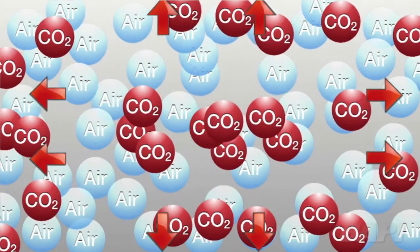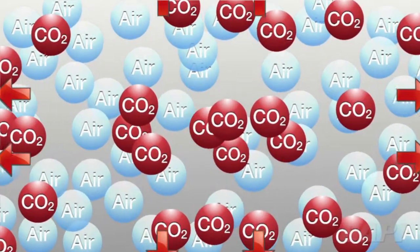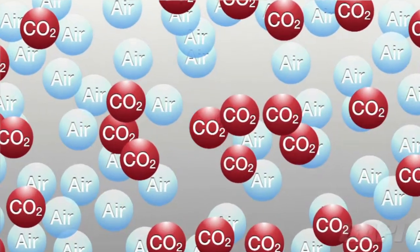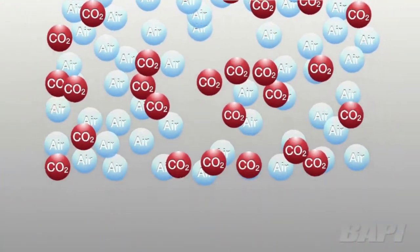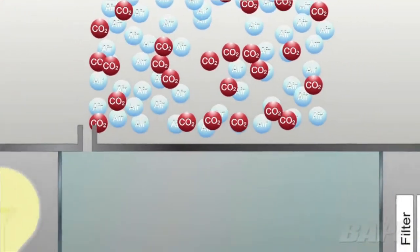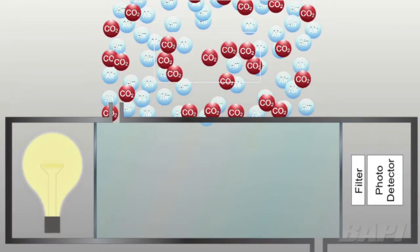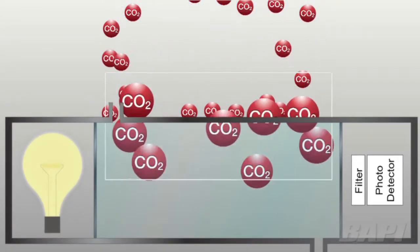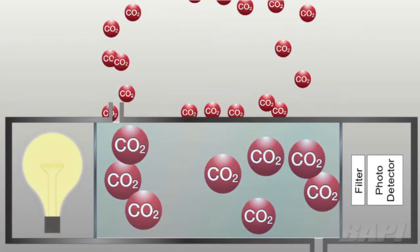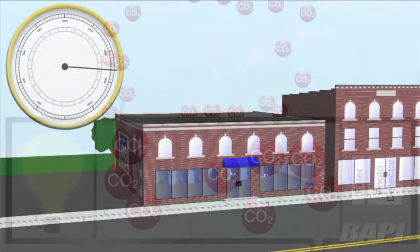At low pressure or high temperatures, there are fewer air molecules in the sample chamber and fewer CO2 molecules, even though the concentration of CO2 hasn't changed. Less CO2 molecules fools the sensor into thinking that the CO2 concentration is lower than it really is.